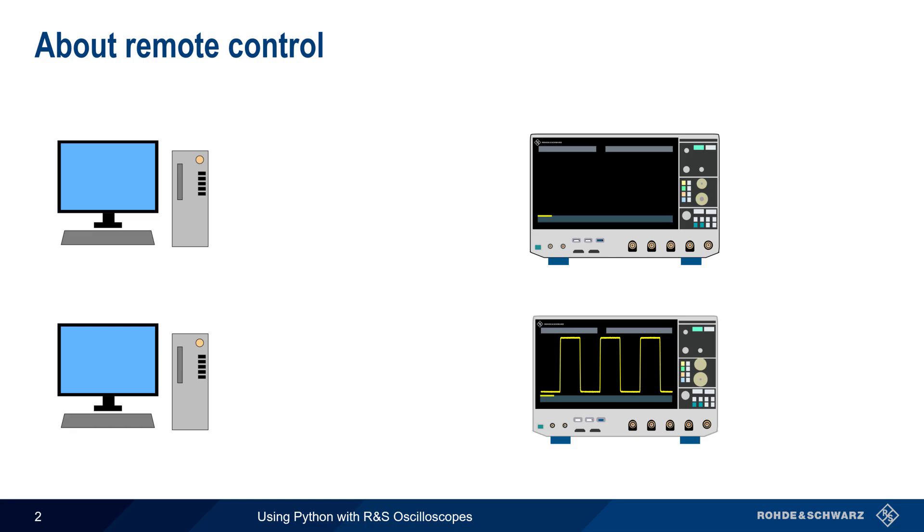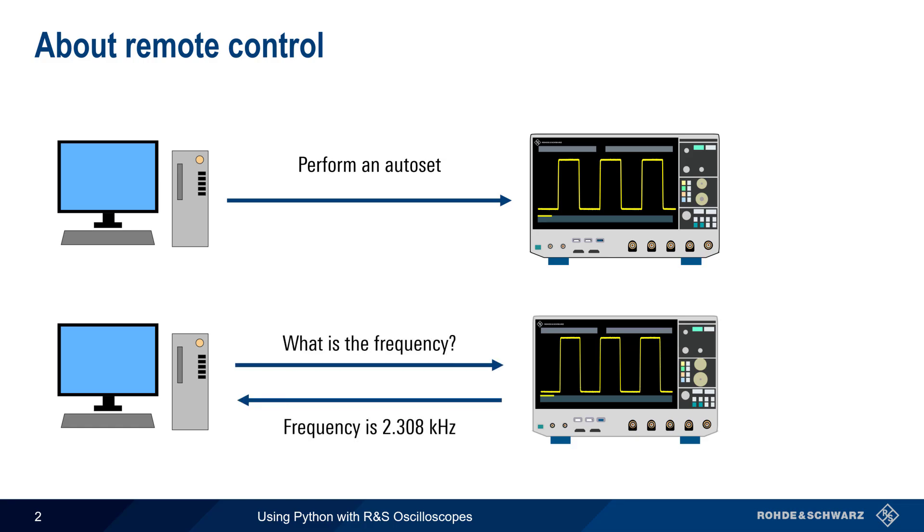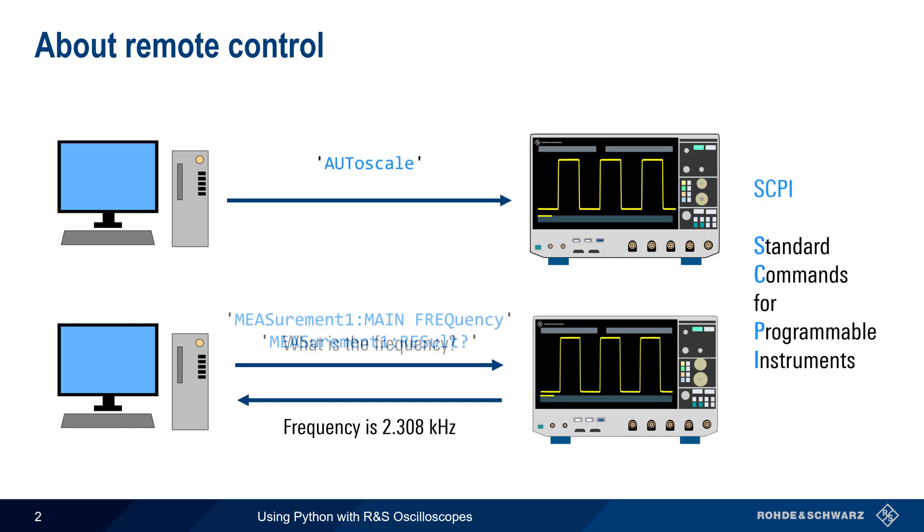Remote control of test and measurement instruments involves both sending commands to an instrument as well as retrieving measurement data or configuration information from an instrument. In almost all modern instruments, this is done over a LAN interface by means of standardized plain text SCPI commands. Many different programming languages can be used to create, send, receive, and parse these text strings, but in this presentation, we'll show how this can be done using Python.